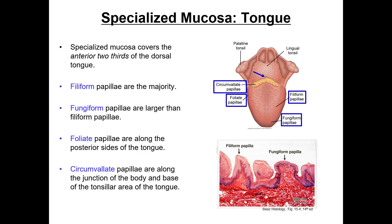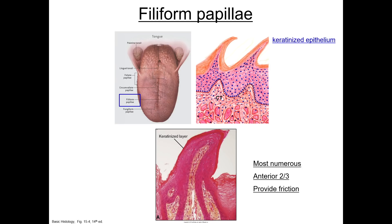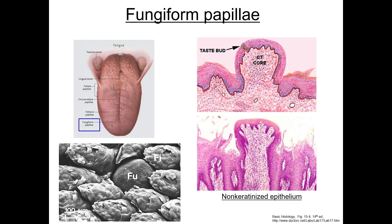Now we'll briefly examine each type of papillae. The filiform papillae lie on the anterior two-thirds of the tongue. They are the most numerous and provide a rough surface that facilitates licking and chewing. These do not contain taste buds, but they have a highly keratinized epithelium that gives them a whitish-grayish appearance — these papillae are what allow us to lick an ice cream cone. Fungiform papillae resemble mushrooms and are found throughout the tongue's surface; these do contain taste buds, but they are not keratinized.